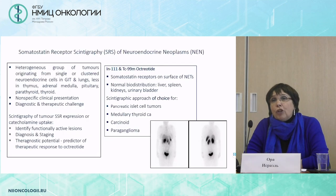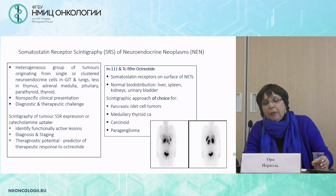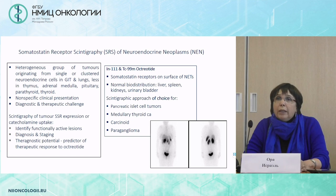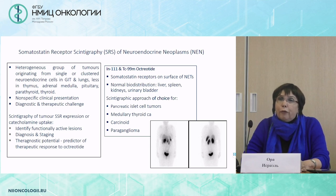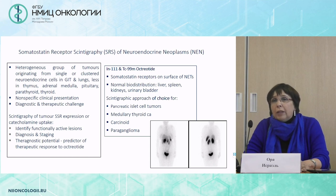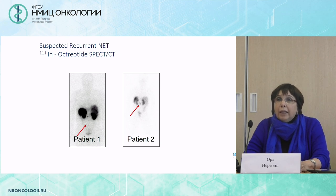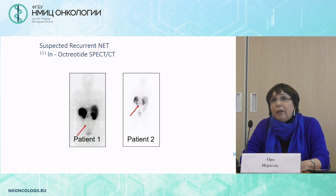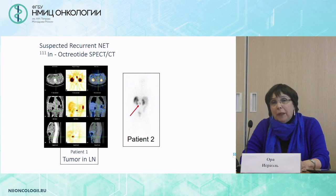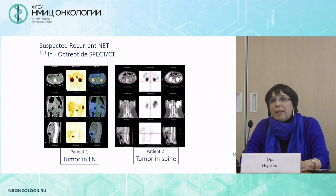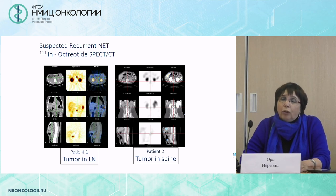Moving to SPECT-CT in endocrinology: we can assess neuroendocrine neoplasms using octreotide labeled with indium-111 or technetium-99m. This is the scintigraphic approach of choice in pancreatic islet cell tumors, medullary thyroid cancer, carcinoid, and paraganglioma. Two of our early patients were both suspected of recurrent neuroendocrine tumors, showing almost the same pattern on planar imaging. But on SPECT-CT, the first patient had a metastatic lymph node, and the second had intrathecal uptake — a metastatic site in the spine — and the treatment recommended by our oncology colleagues was different.